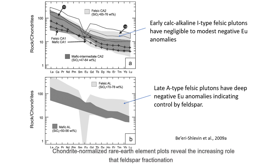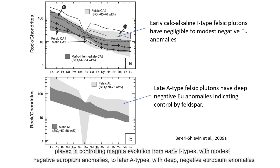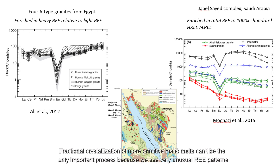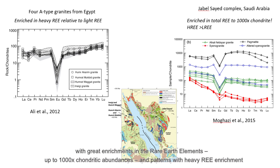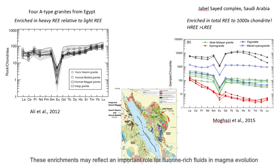Chondrite-normalized rare earth element plots reveal the increasing role that feldspar fractionation played in controlling magma evolution, from early I-types with modest negative europium anomalies to later A-types with deep negative europium anomalies. Fractional crystallization of more primitive mafic melts can't be the only important process, because we see very unusual rare earth patterns with great enrichments in the rare earth elements — up to 1,000 times chondritic abundances — and patterns with heavy rare earth element enrichment. These enrichments may reflect an important role for fluorine-rich fluids in magma evolution. There may be some economic potential for rare earth element deposits in some of these intrusions.